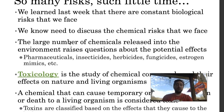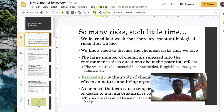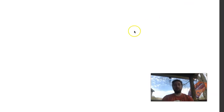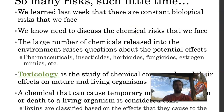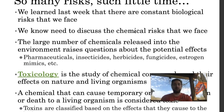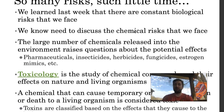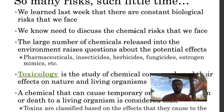Since there are so many biological risks, we also have to consider chemical risks. Every day when you're outside, there are all kinds of risks. Back in the 1960s, people were really concerned with chemical risks, and Rachel Carson in her book Silent Spring really brought toxic chemicals to the forefront of everyone's minds — asking, are we slowly poisoning ourselves? That's when toxicology came to the forefront. Toxicology is basically the study of all these chemical compounds and their effects on nature and living organisms.